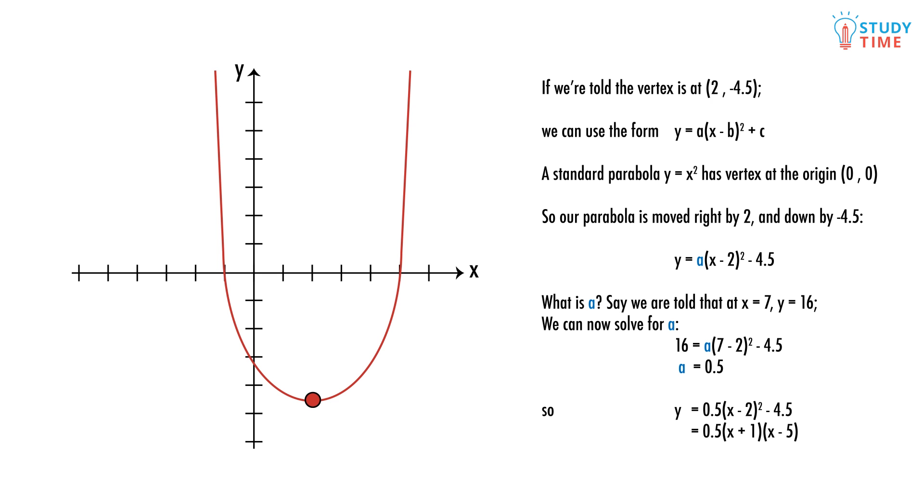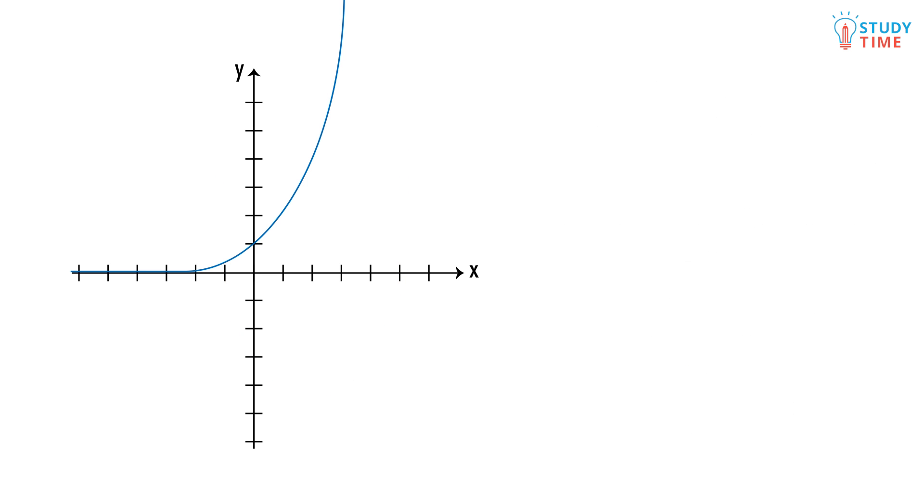Exponential graphs all have a similar equation which looks like y equals a to the power of x, where a is just some number, such as y equals 2 to the power of x shown here. Exponential graphs, just the same as straight lines and parabolas, can be translated up, down, left, and right.